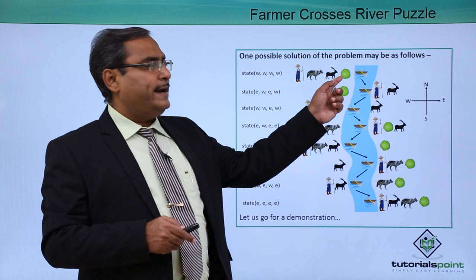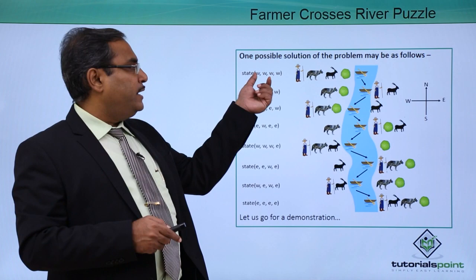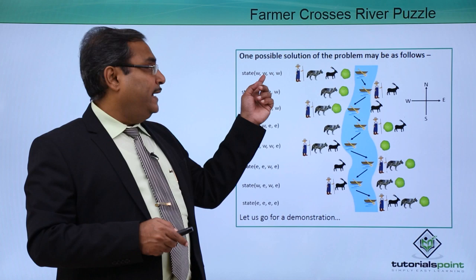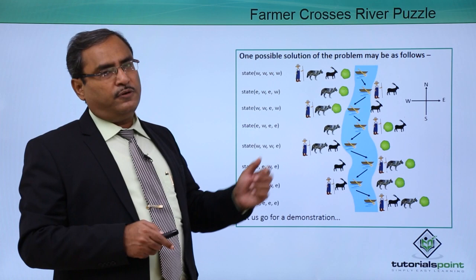Initially the farmer, the wolf, the goat, and the cabbage are all on the Western side of the river, so the state is written as WWWW. We always maintain the sequence: first position is the farmer, second is the wolf, third is the goat, and fourth is the cabbage.